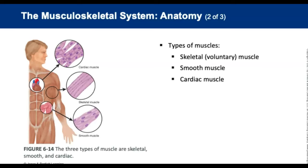There are three types of muscles: skeletal, smooth, and cardiac. The skeletal muscle attaches to the bones of the skeleton and forms the major muscle mass of the body. It is known as voluntary muscle because it is under direct voluntary control of the brain. Smooth muscle and cardiac muscle do not require constant thought — they are involuntary. Smooth muscle is found within the blood vessels and intestines, and cardiac muscle is found in the heart.